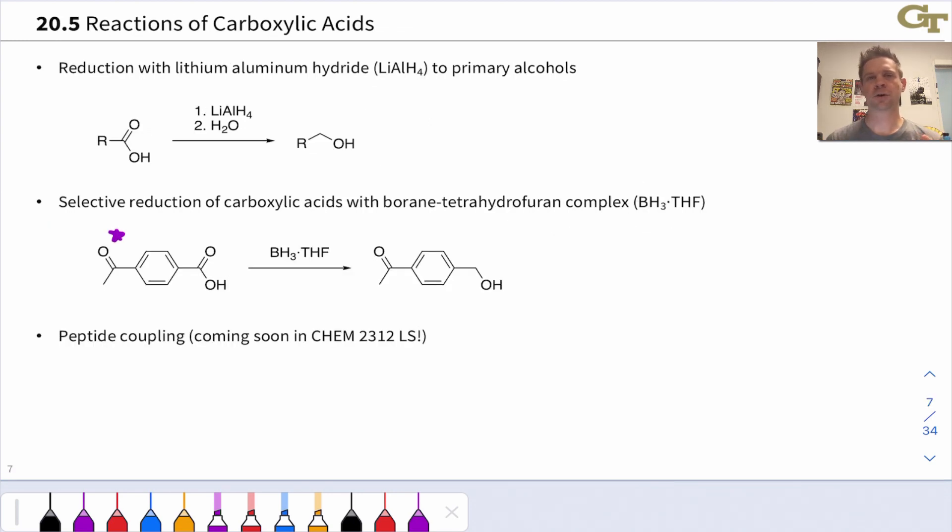We'll soon see that among all these different heteroatom-substituted carbonyl compounds, carboxylic acids and carboxylic acid derivatives, carboxylic acids themselves are generally relatively unreactive with nucleophiles. The fact that they're acidic creates some problems if we want to react them with a nucleophile, and so they're relatively unreactive with nucleophiles and unreactive overall. But this slide shows you three important reactions of carboxylic acids that we do want to keep in mind.